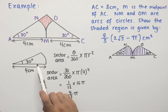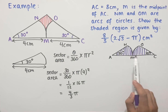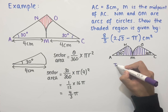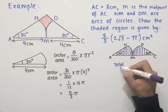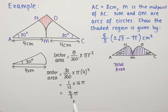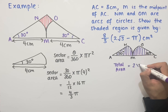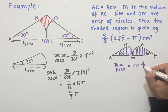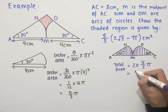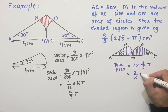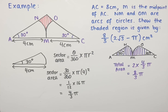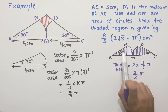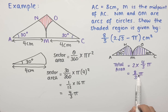Since we have two of these sectors within our diagram, the total area of the two sectors equals 2 multiplied by 4 over 3 pi, which simplifies to 8 over 3 pi. We can already see some of the values we're trying to show appearing in what we've worked out.